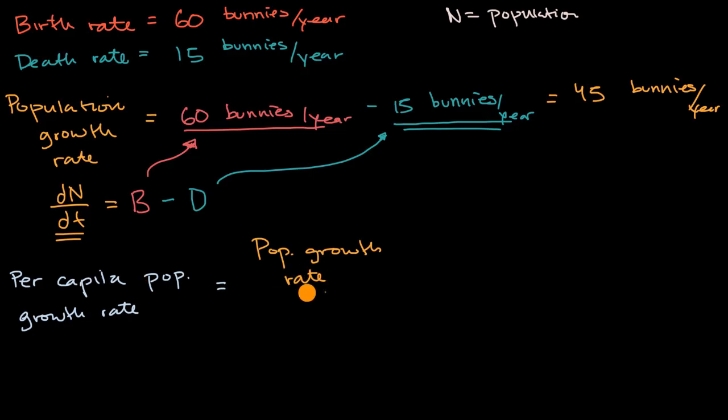Growth rate, divided by our population. Population. Now let's say that we have a population of 300 bunnies. Actually, let's make the math a little bit simpler. Let's say we have a population of 450 bunnies.